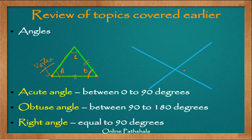Similarly, if we look at just two simple line segments meeting at a point, we can see that angles are formed. This is angle 1, this is angle 2, angle 3, and angle 4. So angles are simply formed whenever two lines meet at a point.